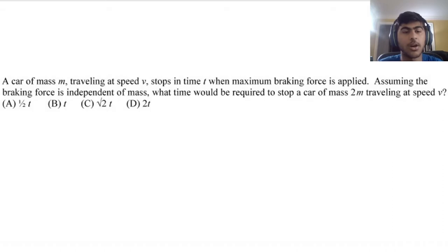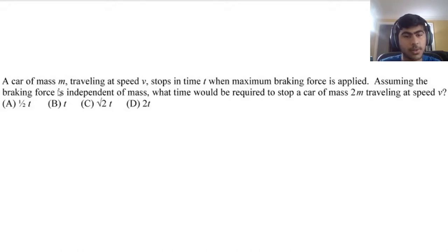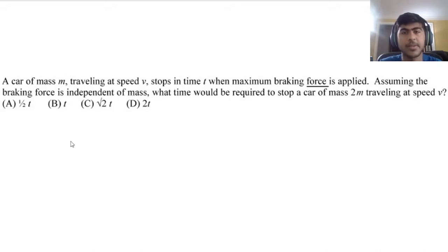A car of mass m traveling at speed v stops in time t when maximum braking force is applied. Assuming the braking force is independent of mass, what time would be required to stop a car of mass 2m traveling at speed v? We see that we have a mass, a velocity, a time, and a force — and what that makes you think of is impulse.